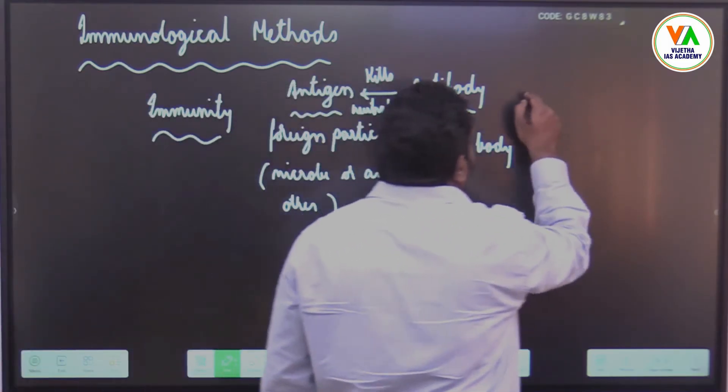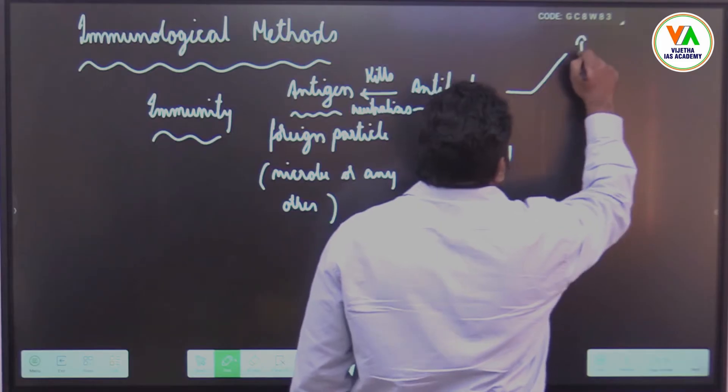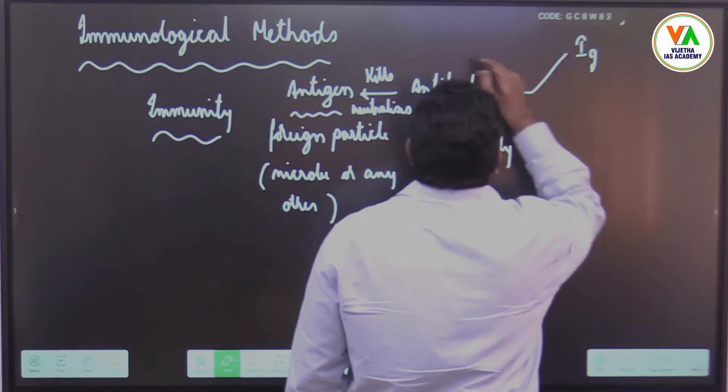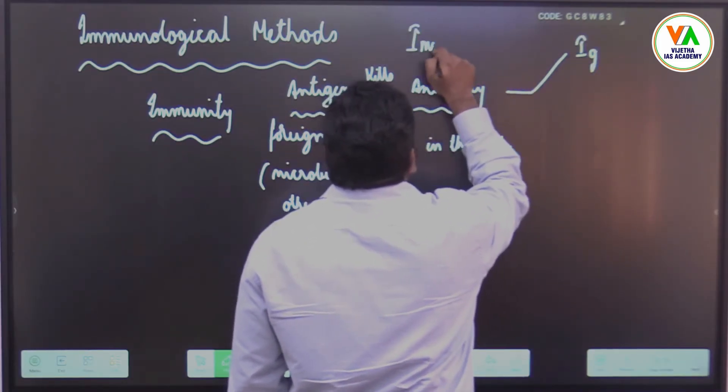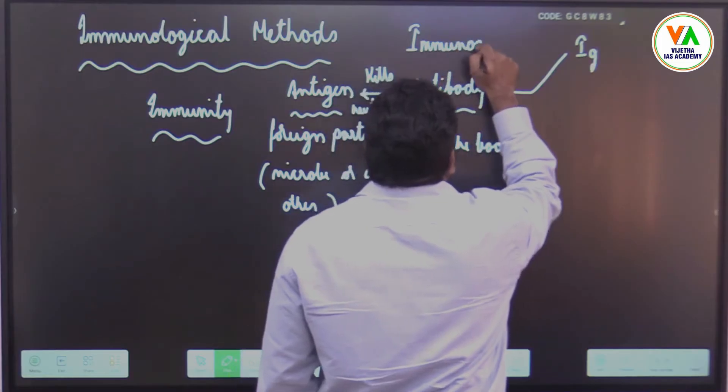These antibodies are of different types. For example, these are also known as immunoglobulins. Antibodies are known as immunoglobulins.